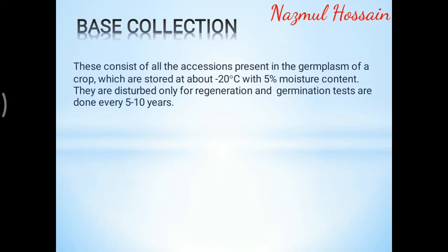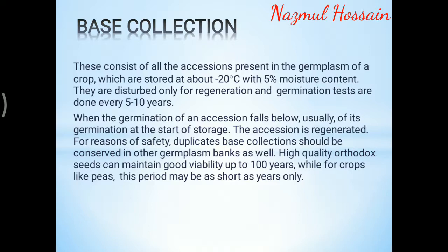Base collection: this consists of all the accessions present in the germplasm of a crop, stored at about minus 20 degrees Celsius with 5% moisture content. They are distributed only for regeneration, and germination tests are done every 5 to 10 years. When germination of an accession falls below the usual level at the start of storage, the accession is regenerated. For safety, duplicate base collections should be conserved in other germplasm banks. High-quality orthodox seeds can maintain good viability for up to 100 years.